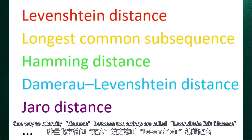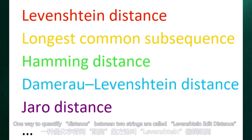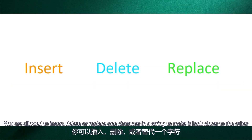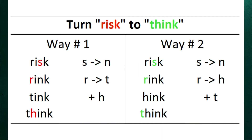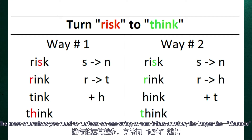One way to quantify distance between two strings is called Levenshtein Edit Distance. You're allowed to insert, delete, or replace one character in a string to make it look closer to the other. The more operations you need to perform on one string, the longer the distance.